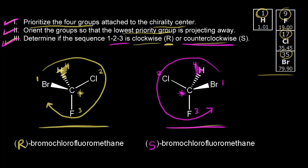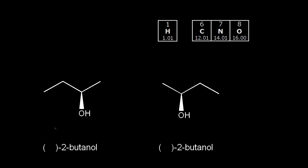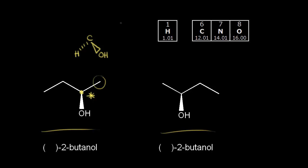Here we have another pair of enantiomers — an alcohol on the left and its mirror image on the right. Let's start with the one on the left. This is the chiral center, and our goal is to assign a configuration to it. Let's redraw the molecule: the OH is on a wedge, hydrogen is going away on a dash, to the right we have a methyl group (CH3), and to the left we have an ethyl group.